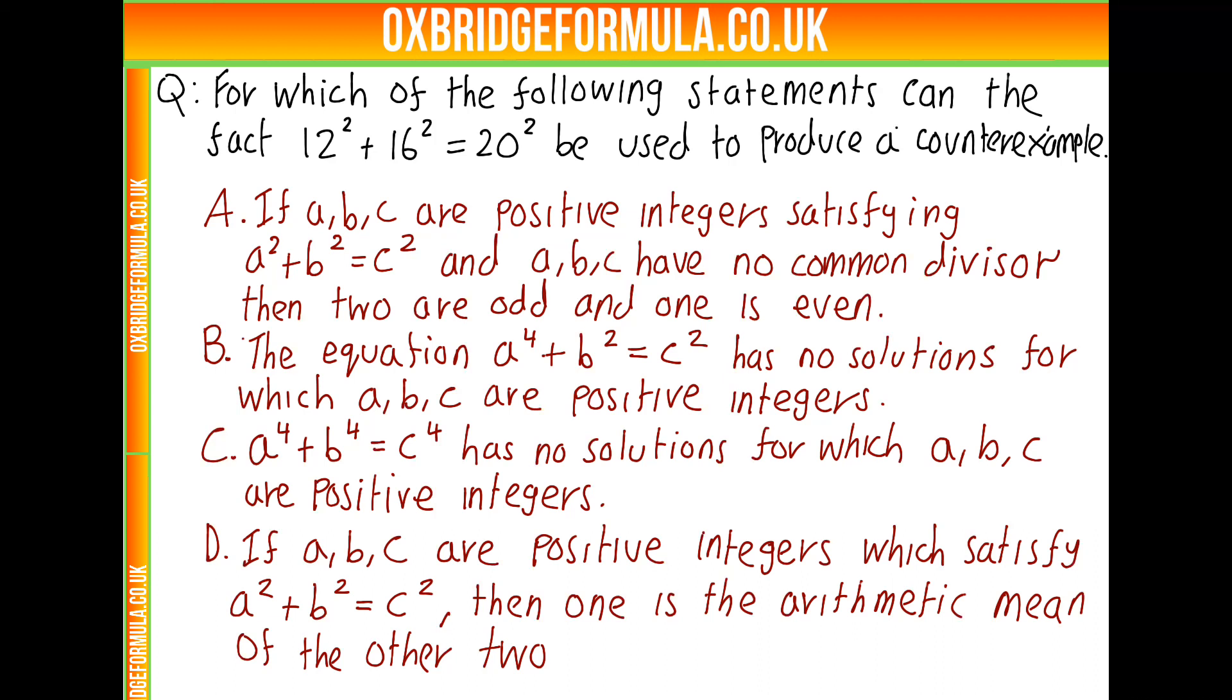Statement D: If A, B, C are positive integers which satisfy A squared plus B squared equals C squared, so A, B, C are a Pythagorean triple, then one of these numbers is the arithmetic mean of the other two.